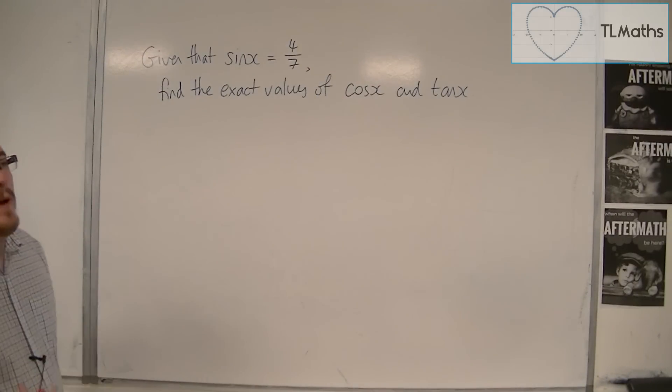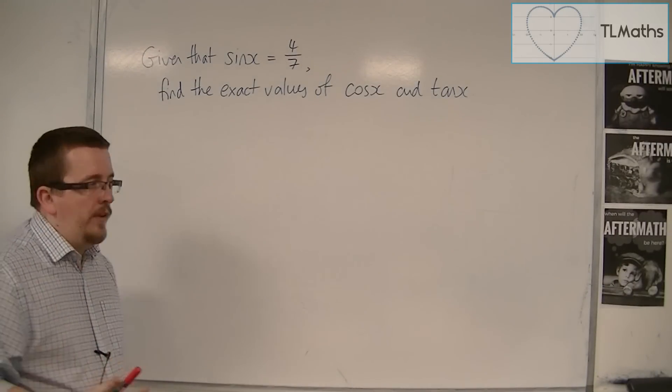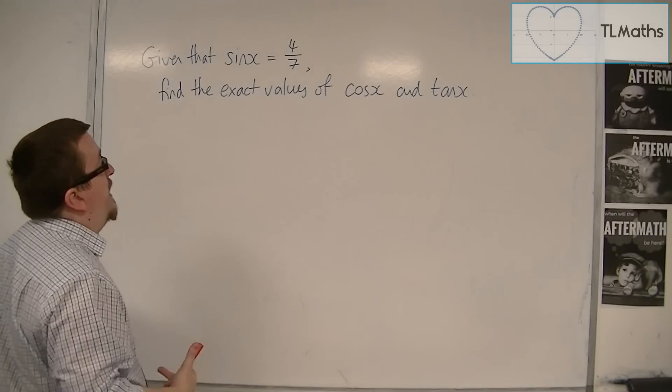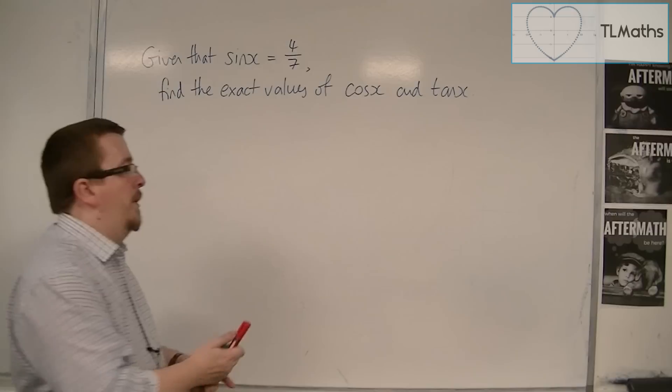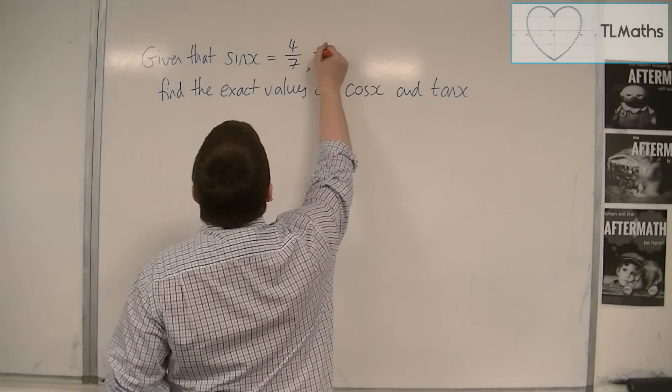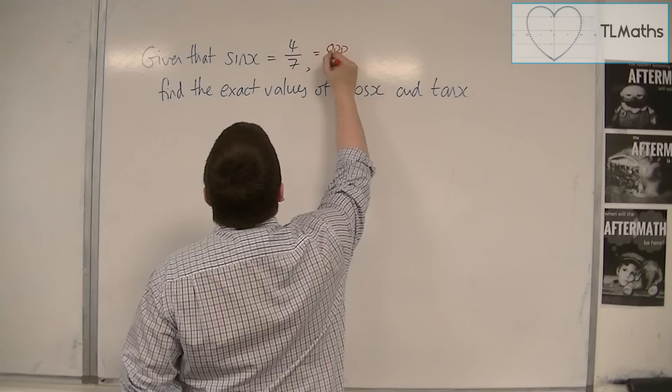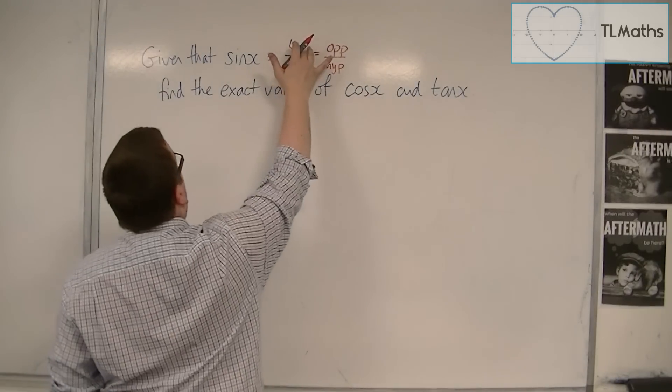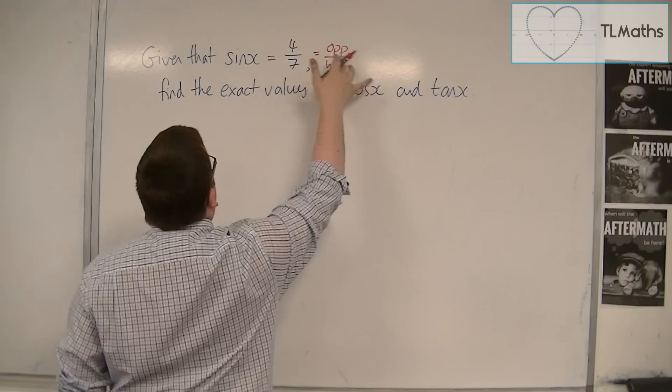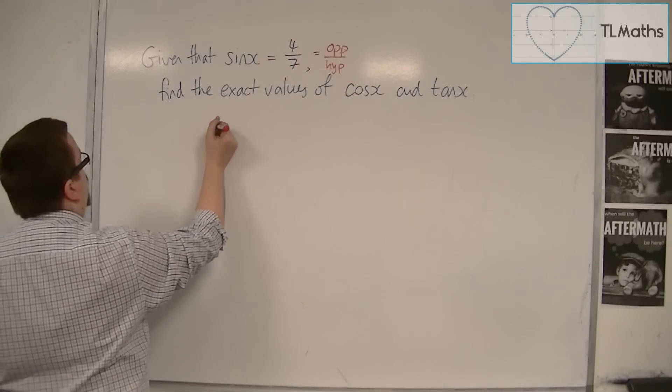The most succinct way of looking at this is to think that sin(x), we know from SOHCAHTOA, is opposite over hypotenuse. So this is equal to the opposite over hypotenuse. And so from that, you can easily identify that 4 must be the opposite and 7 must be the hypotenuse of a right-angled triangle.